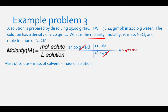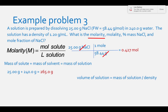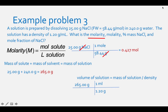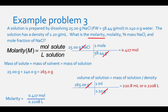To find liters of solution, add solute and solvent masses: 25.00 g + 240.0 g = 265.0 g. Then divide by density: 265.0 g ÷ 1.20 g/mL = 220.8 mL, or 0.2208 L. To find molarity, divide moles of solute by liters of solution: 0.427 mol ÷ 0.2208 L = 1.93 molar.